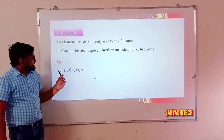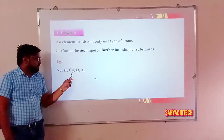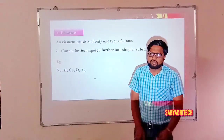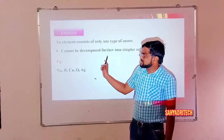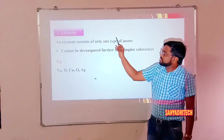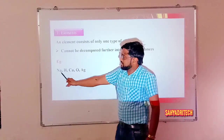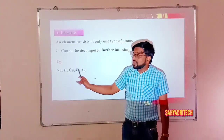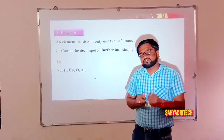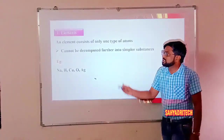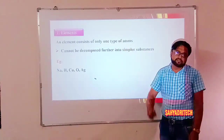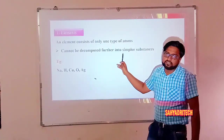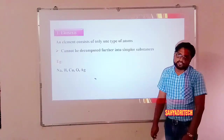For example, elements include sodium, hydrogen, copper, oxygen, and silver — in total we have 120 known elements. Each element is made up of only one type of atom: sodium is made up of sodium atoms, hydrogen of hydrogen atoms, copper of copper atoms. Elements cannot be decomposed further into any simpler substances.